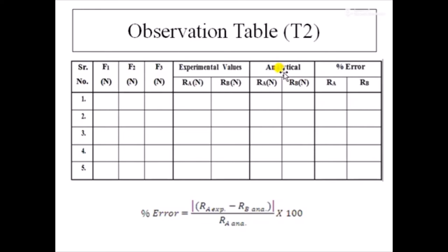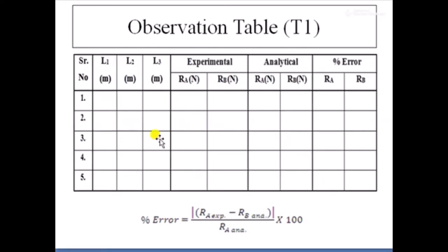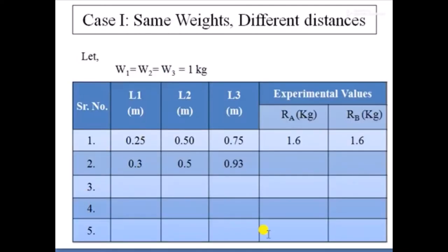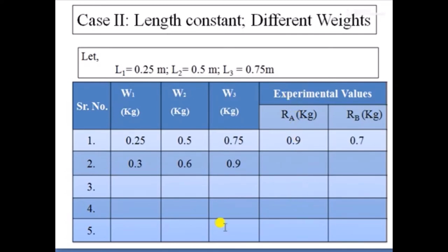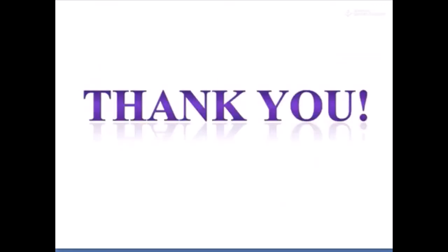This is how we validate experimental data with an analytical backup. We take 5 readings for Case 1 from table T1 and 5 readings for Case 2 from table T2, then take the average percentage error for Ra and Rb in both cases to ultimately determine the difference between experimental and analytical values. Thank you — please give your feedback in the comment section, and if you have any queries you can ask in the comment box.